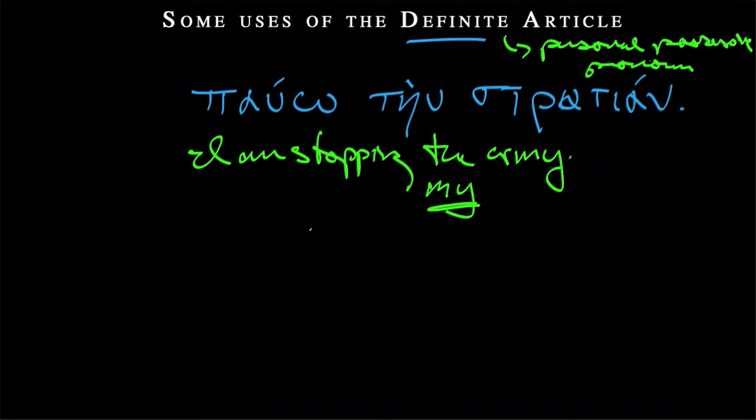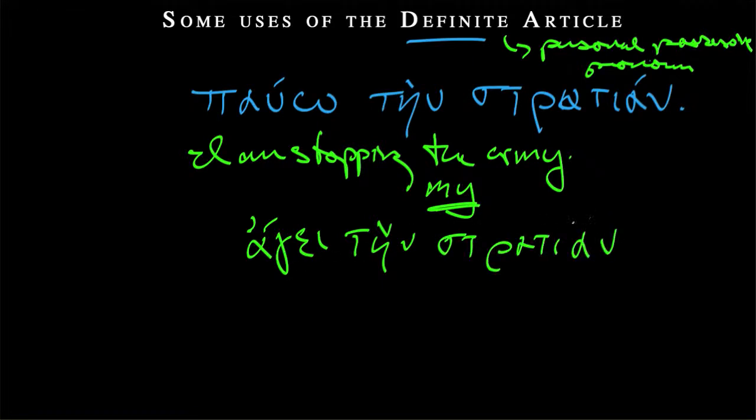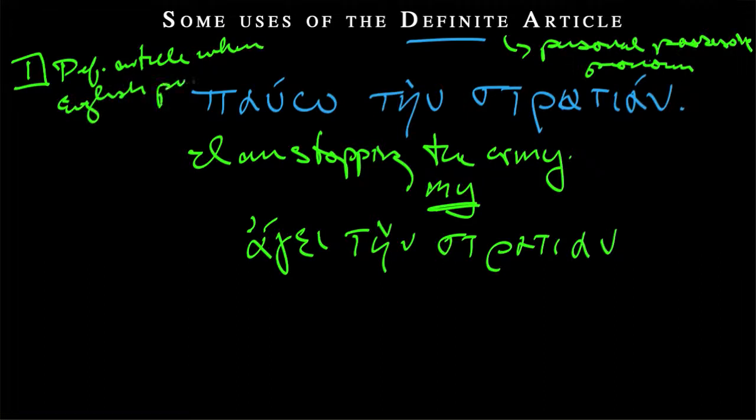So this happens. Shelmerdine gives the example, age tein stration. So again, similar idea. He, she, it is leading the army, but really it could be his or her army. For the Greeks, almost exclusively his, but there are some notable exceptions. That's what's going on. So we have, I guess let's make that our first case: definite article where English prefers possessive. So that's one option that we can do.